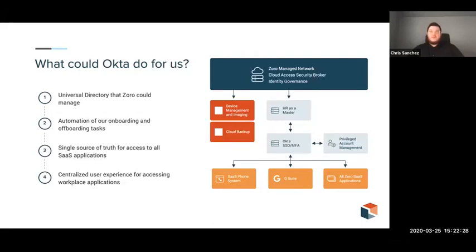Okta gave us a universal directory — a single source of truth for our users — and would allow my team to start automating some of the manual processes around onboarding and offboarding, freeing up time to work on support tickets and other projects. I was especially excited about having a single location to see which Zorro-managed tools individual users had access to, allowing us to be more secure and better audit those applications. And on the end-user side, having a single centralized location to access everything they needed to work would be a game changer, saving them time and saving us support resources. At the end of 2018 and beginning of 2019, we basically got approval to move forward with this plan.